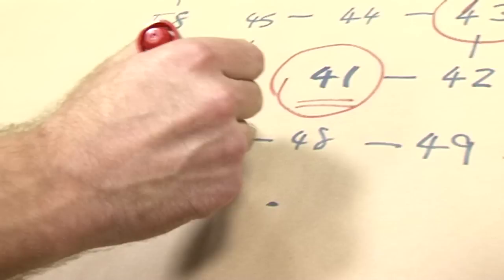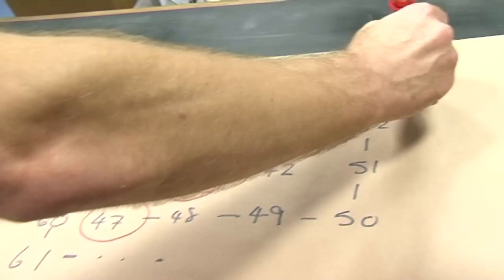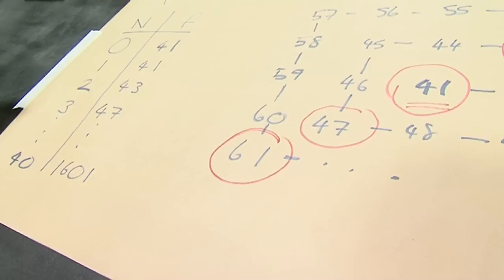The next number, if I put in n equals 4, the next number I would find would be 53. That's up here. And then we continue and we find 61. 61 is down here. And so on.